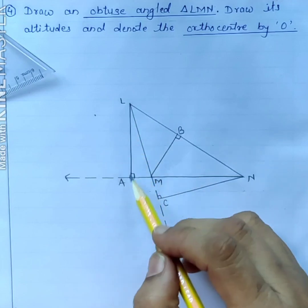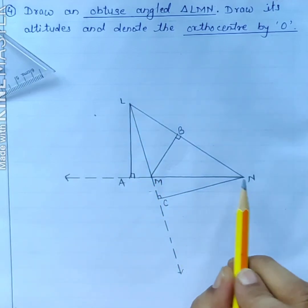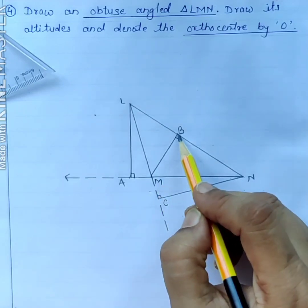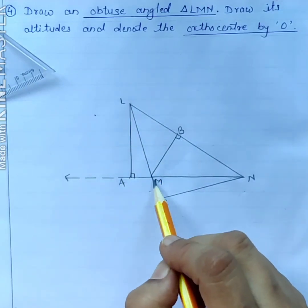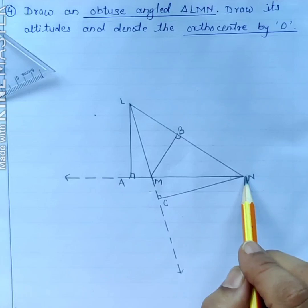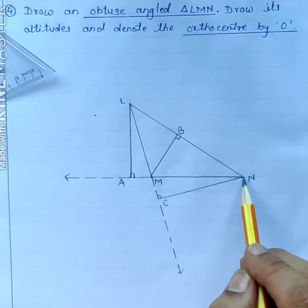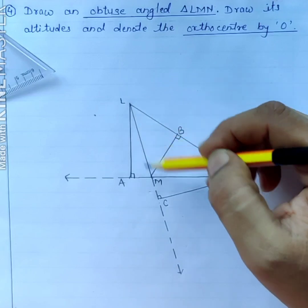Segment LA is altitude from vertex L to the side MN. Altitude MB from vertex M to the side LN. And segment NC is an altitude from vertex N to the side LM.